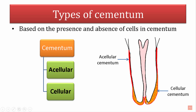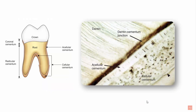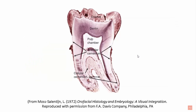The cellular cementum contains cells called cementocytes, whereas the acellular cementum lacks any cells. In the ground section of the tooth root at the apical zone, you can see both types. Focusing on the coronal half, the acellular cementum is very thin in that zone, whereas the cellular cementum occupies the apical zone and is thicker compared to the acellular cementum.